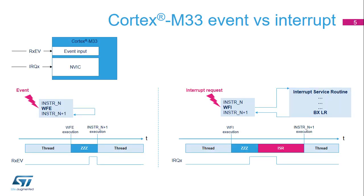The Cortex-M33 supports two ways to enter a low-power state. First, executing the wait-for-event or WFE instruction. Second, executing the wait-for-interrupt or WFI instruction. With WFE, the first instruction executed after a wake-up event is the next sequential one, i.e., n+1 in the sequence. By implementing WFI, the processor jumps to the interrupt service routine when an enabled interrupt request is received. Note that an interrupt request is a WFE exit condition, but an event received on RxEV is not a WFI exit condition.